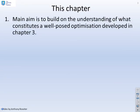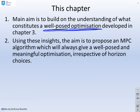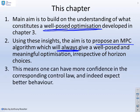So what are we going to do in this chapter? The main aim is to build on the understanding of what constitutes a well-posed optimisation. We're going to use the insights from the previous chapter to propose an MPC algorithm which will always — irrespective of your degrees of freedom and horizon choices — give a well-posed and meaningful optimisation. This means you can have confidence in the corresponding control law and expect better behaviour, unlike previous optimisations which didn't always make sense.